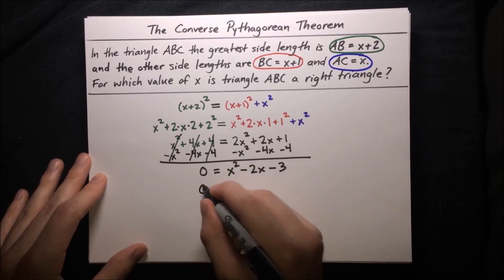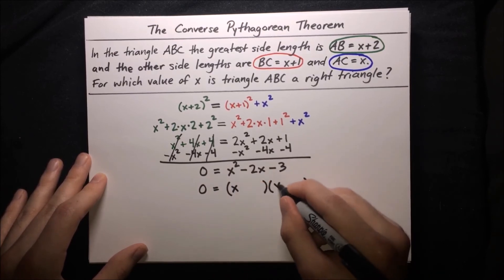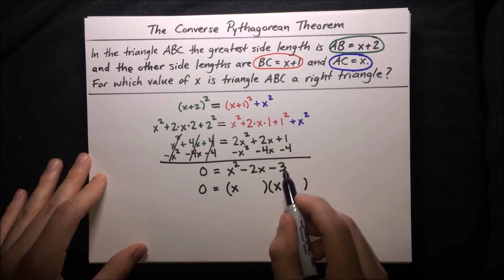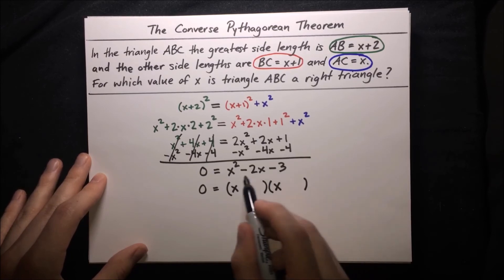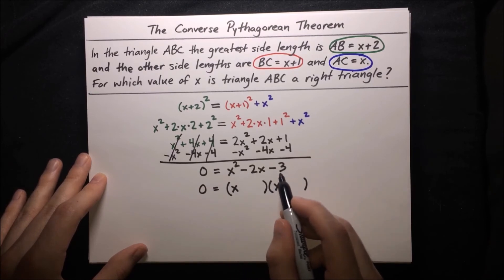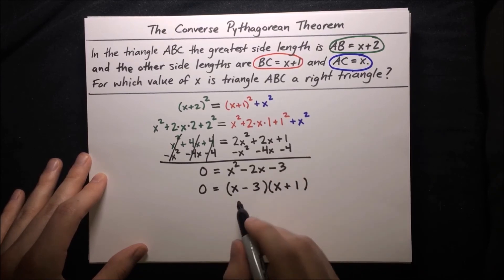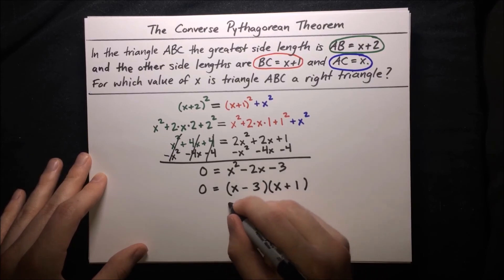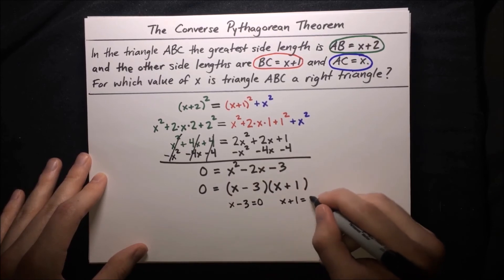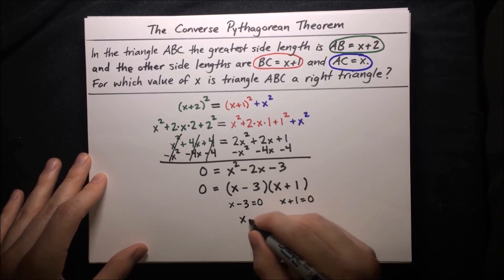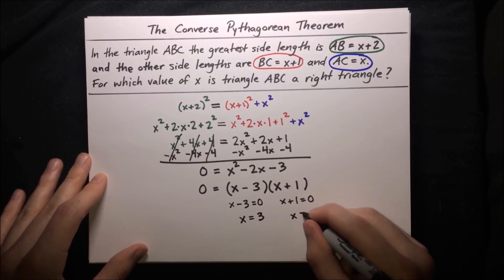Now we can factor the right-hand side. We need two numbers that multiply to negative 3 and add to negative 2. The only factors of 3 are 1 and 3, and since the sum is negative we make the larger number negative. So we get x minus 3 times x plus 1. Using the zero product property, x minus 3 equals 0 gives x equals 3, and x plus 1 equals 0 gives x equals negative 1.